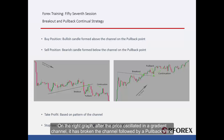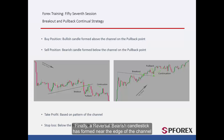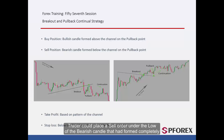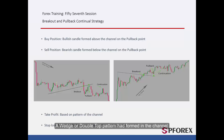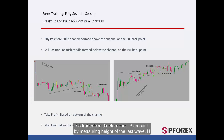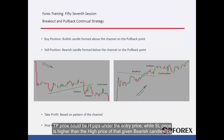On the right graph, after the price oscillated in a gradient channel, it has broken the channel followed by a pullback trend. Finally, a reversal bearish candlestick has formed near the edge of the channel on the pullback point, so price decreases towards the bottom. A trader could place a sell order under the low of the bearish candle that has formed completely. A wedge or double top pattern had formed in the channel, so a trader could determine TP amount by measuring the height of the last wave, H. TP price could be H pips under the entry price, while SL price is higher than the price of that given bearish candlestick.